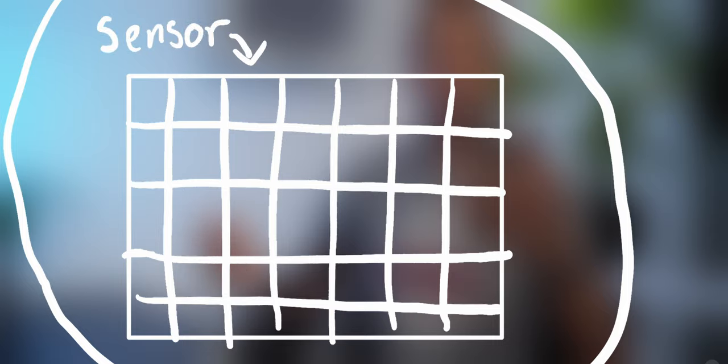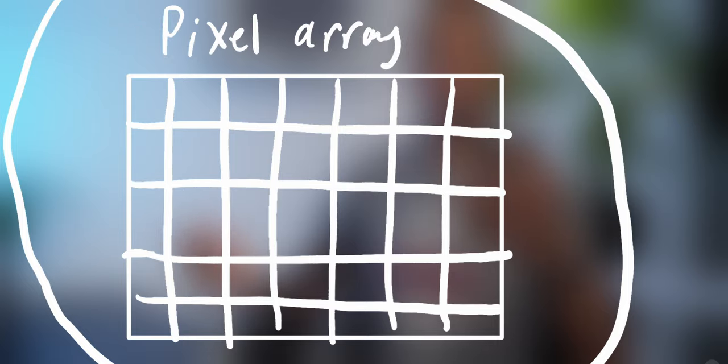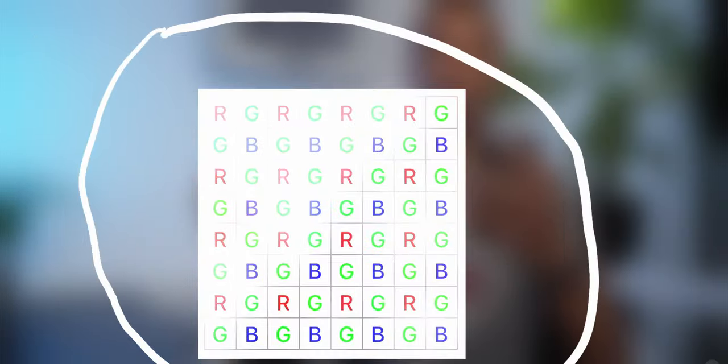If we take off the lens and look behind it, that's the sensor. To make this easier to visualize, you can think of the sensor as a rectangular grid with buckets that can capture light. More specifically, that grid is a pixel array which contains red, green, and blue pixels. Each pixel can only capture red, green, or blue light.